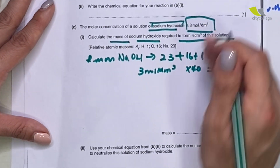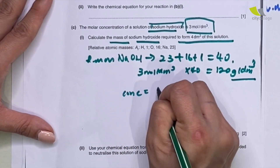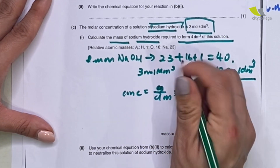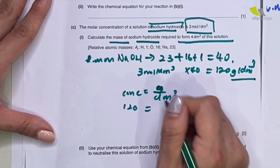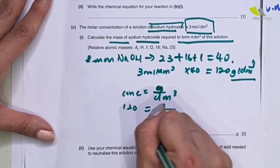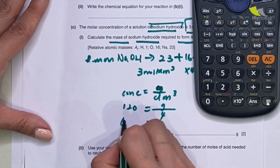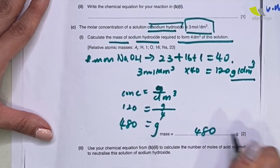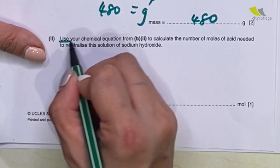Now I know the concentration in gram per dm³. I just need to multiply by volume to find the mass. Concentration equals gram over dm³. Concentration is 120, volume is 4 dm³. So mass = 120 × 4 = 480 gram.